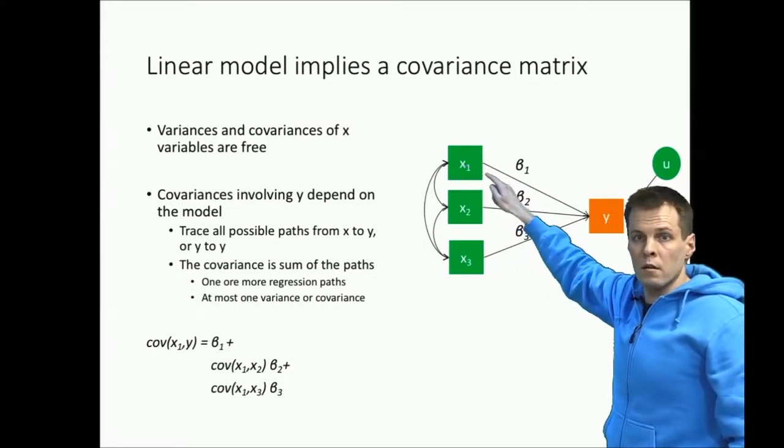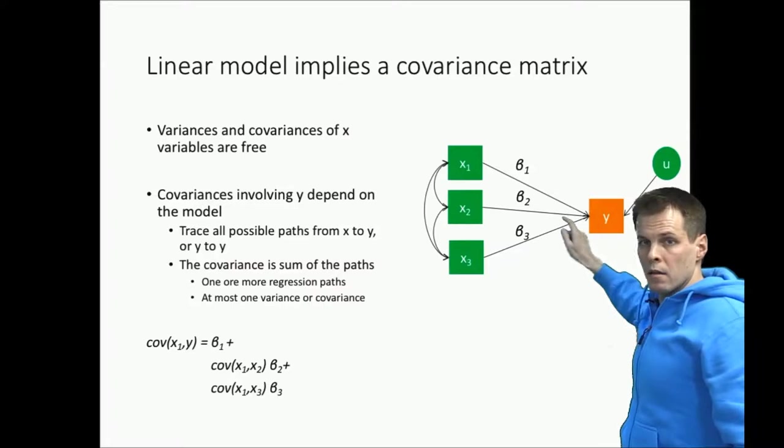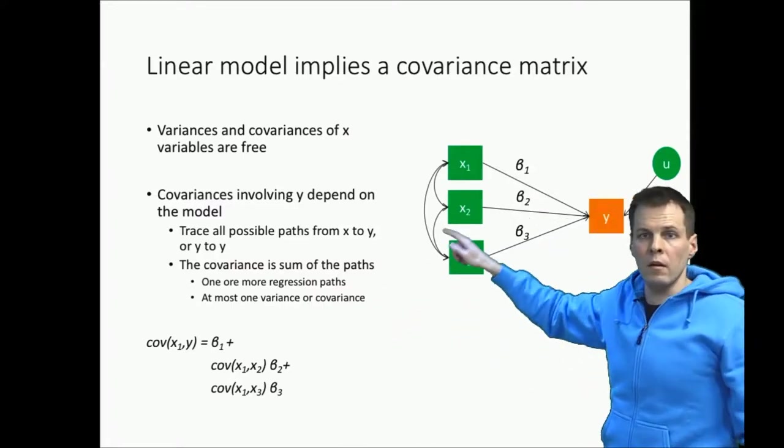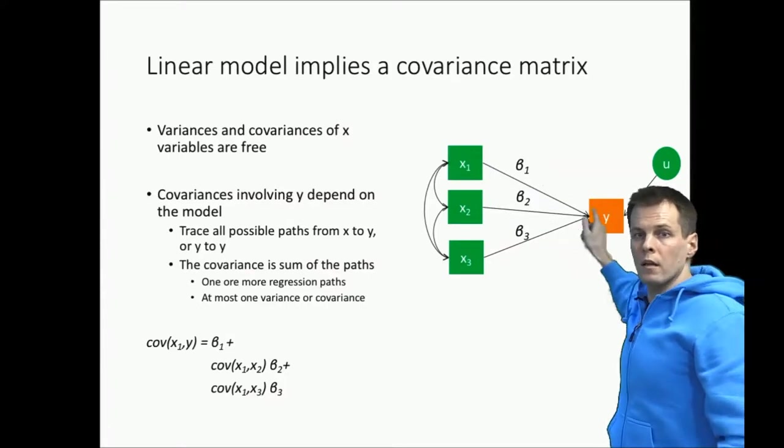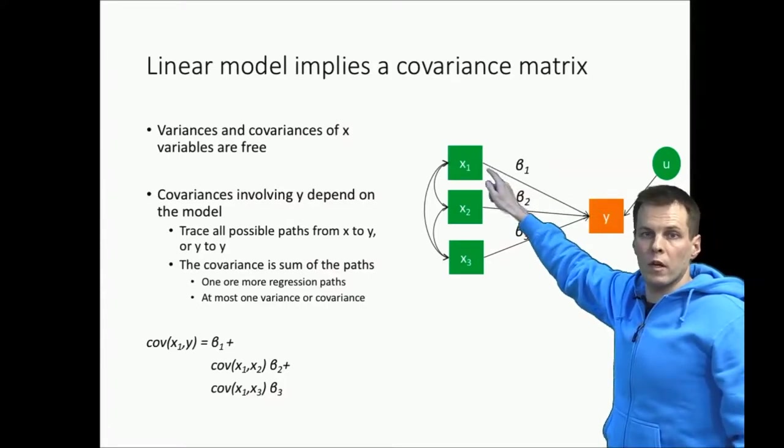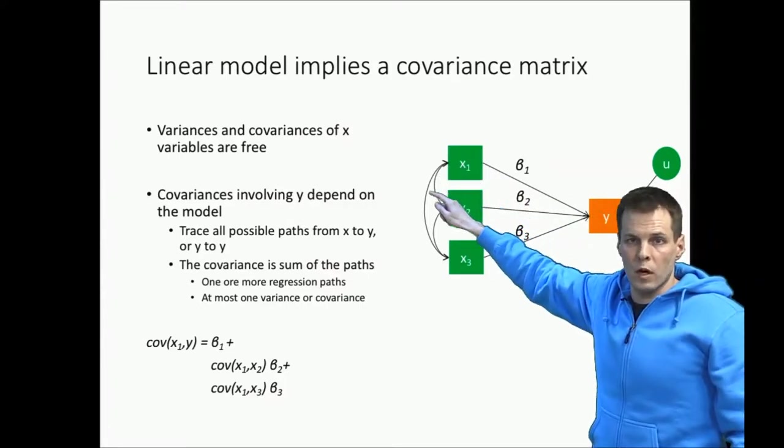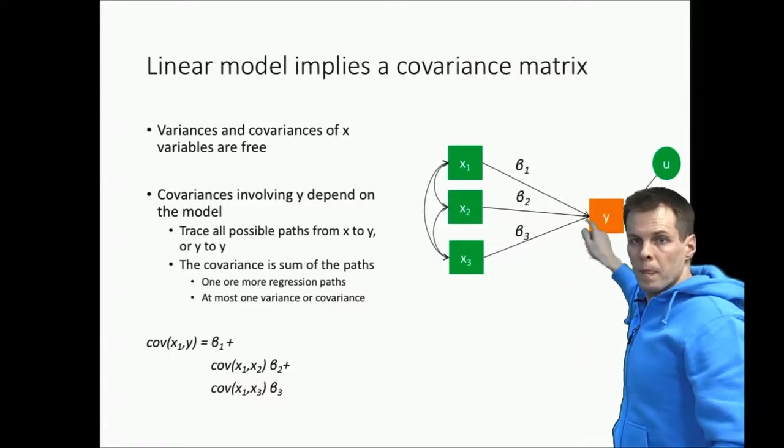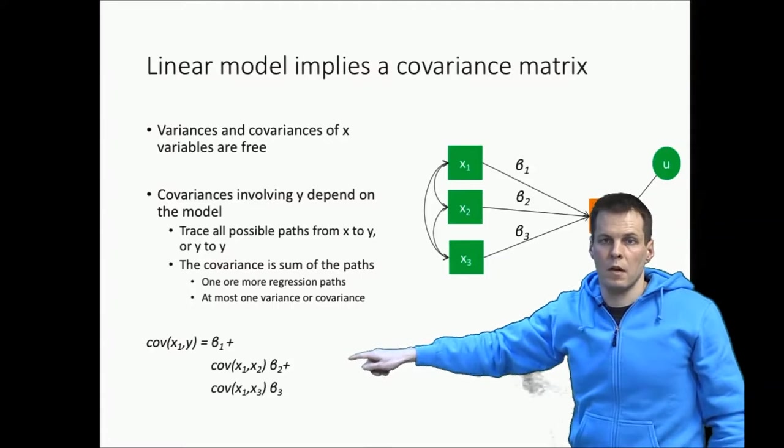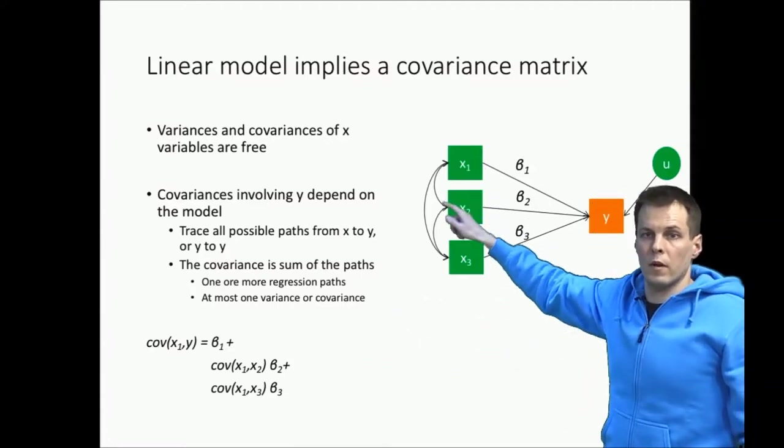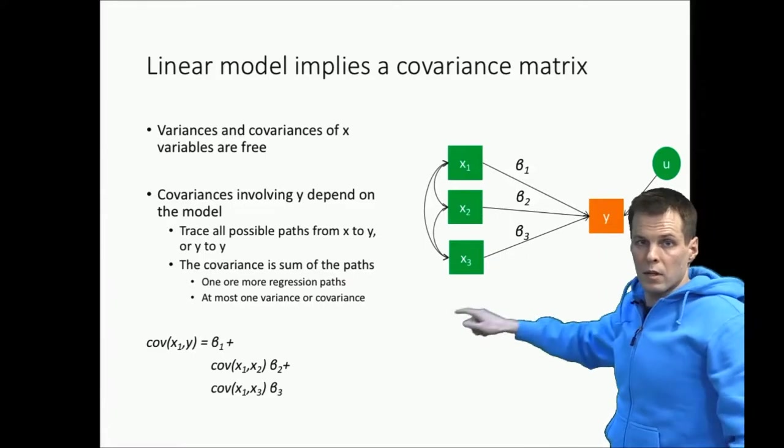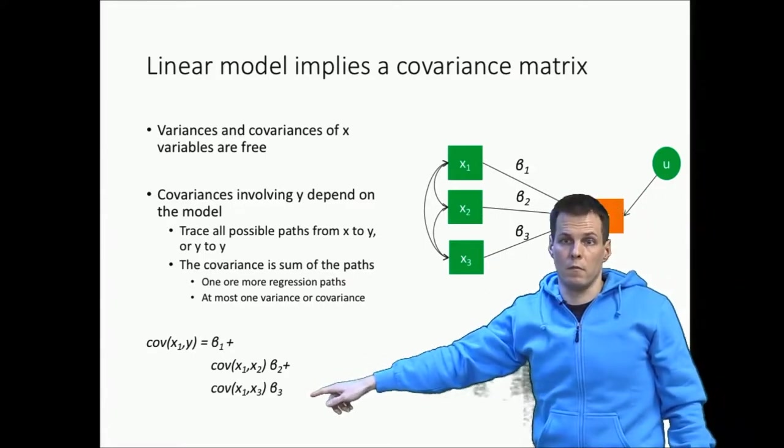So we have x1 to y one path, we get the beta one goes here. Then another way of x1 to y is to travel one covariance x1 to x2, so that's covariance and then regression path. So we get that, and then x1 to x3, one covariance and then to y. So that's the third.